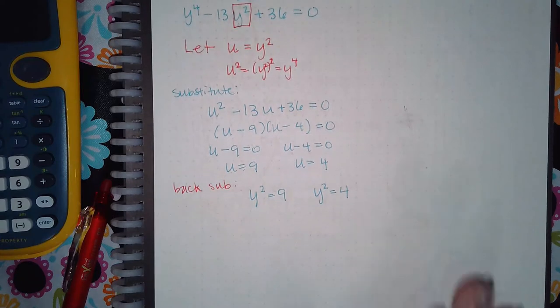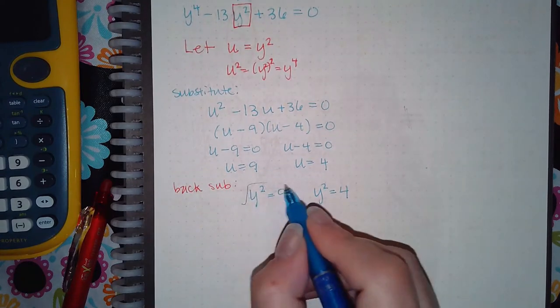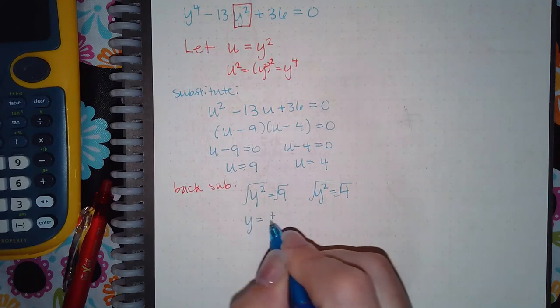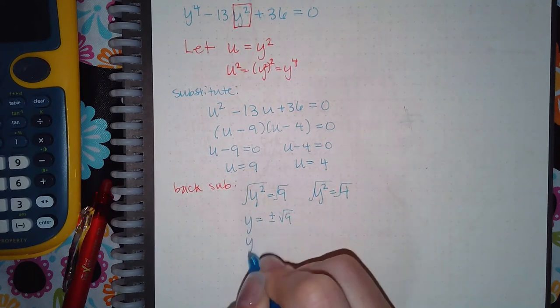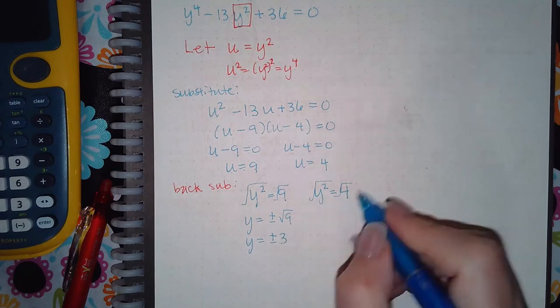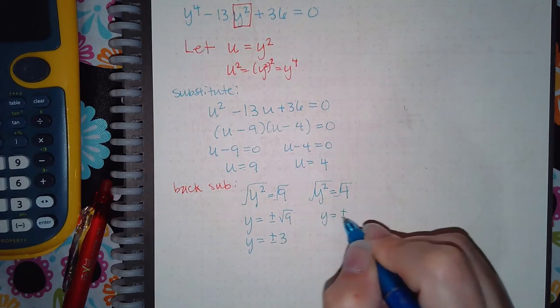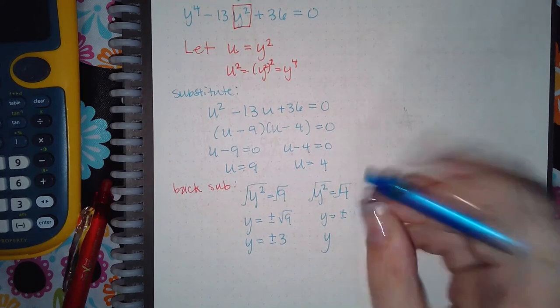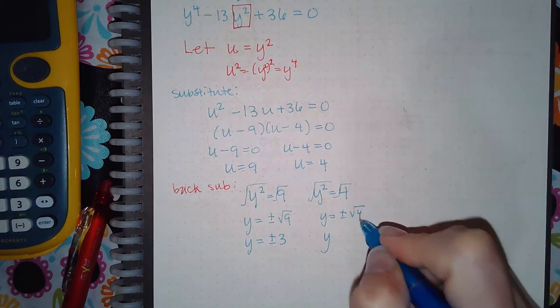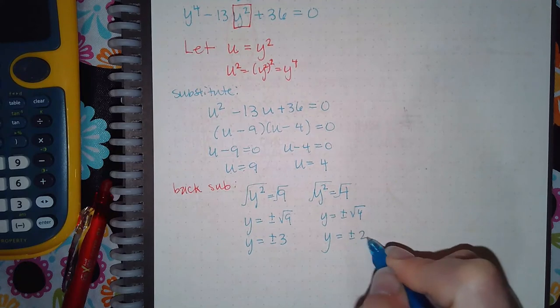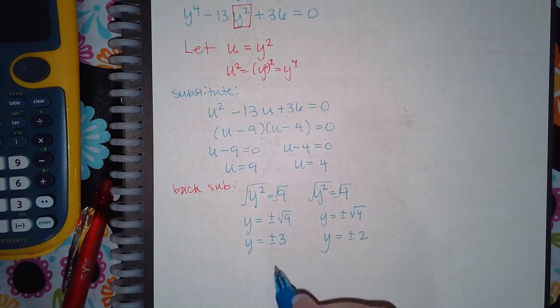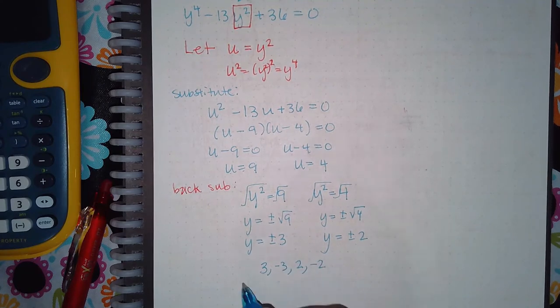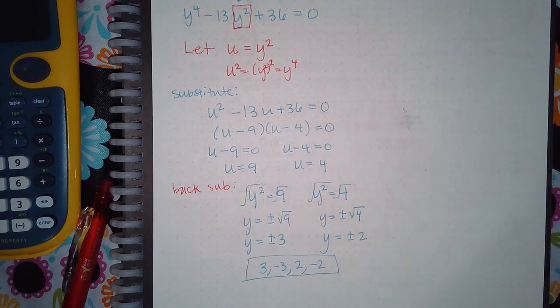And how do you solve those equations? You take the square root on both sides. You get y equals plus or minus the square root of 9. Which means y equals plus or minus 3. Over here, you get y equals plus or minus 2. Or actually, y equals plus or minus the square root of 4. Which is plus or minus the square root of 2. So you have four answers. 3, negative 3, 2, and negative 2. Four solutions there.